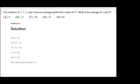That means that 3 + 5 + 7 + A + B = 75. We know that 3 + 5 + 7 is 15, and 75 - 15 = 60.